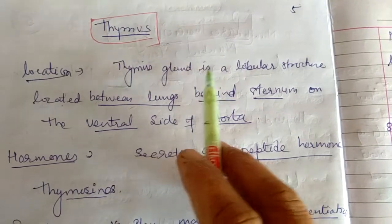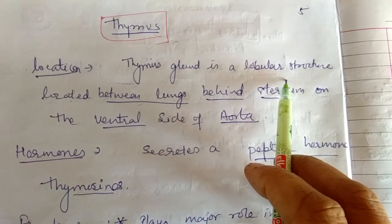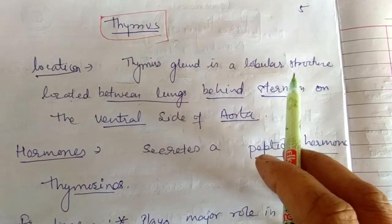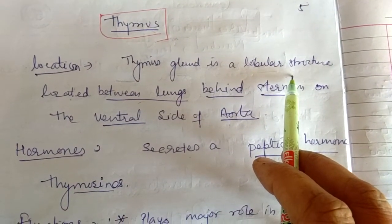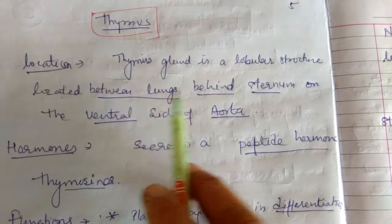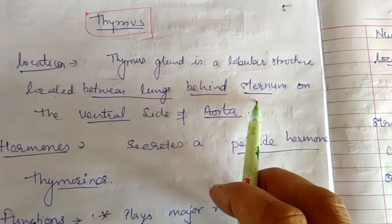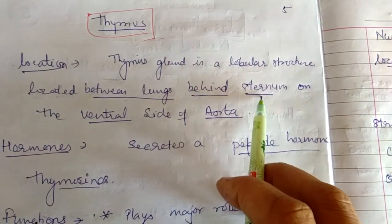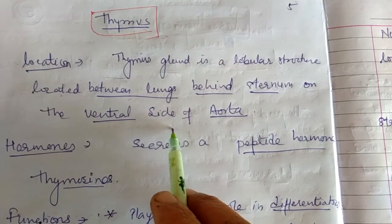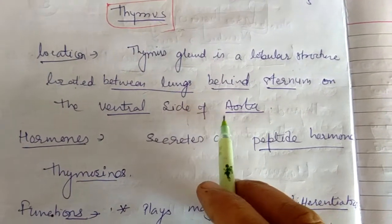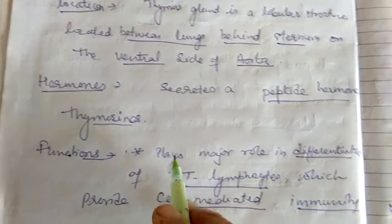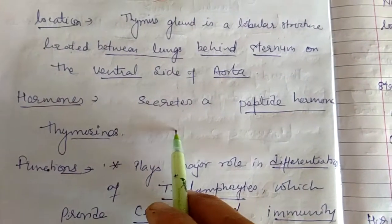The thymus gland is a lobular structure. It is present between the lungs, behind the sternum — that is the chest bone — and on the ventral side of the aorta. This is the location of the thymus gland.